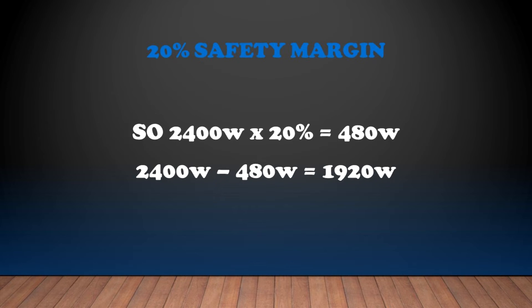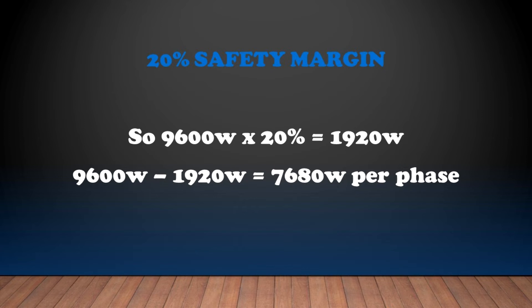So for our example, instead of having 9,600 watts per phase, let's give it a safety margin of 20% and assume now that our total per phase is actually 9,600 watts multiplied by 20% equals 1,920 watts. So 9,600 watts minus 1,920 watts equals 7,680 watts. So that means you can distribute all of your lights throughout the three-phase distros that you have available for you, avoiding all of the clustering as I mentioned before.